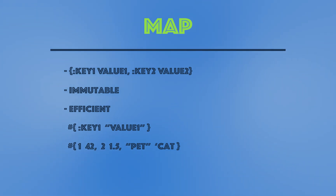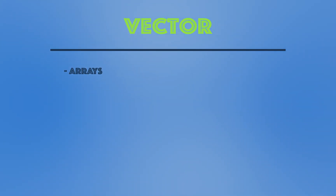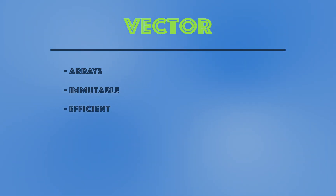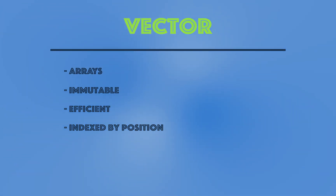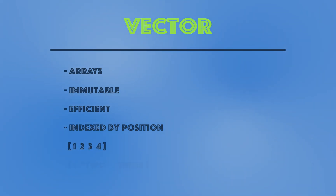You can also have a string "pet" as a key and a symbol "cat" as a value. Now let's talk about vectors. Vectors are arrays in other languages. The same things apply — they are immutable and efficient, just like sets and maps. They are indexed by position, so you can access a value based on its position. For example, you can have a vector of 1, 2, 3, 4, or a vector containing 1, the string "two", and the symbol "three", or you can have an empty vector.